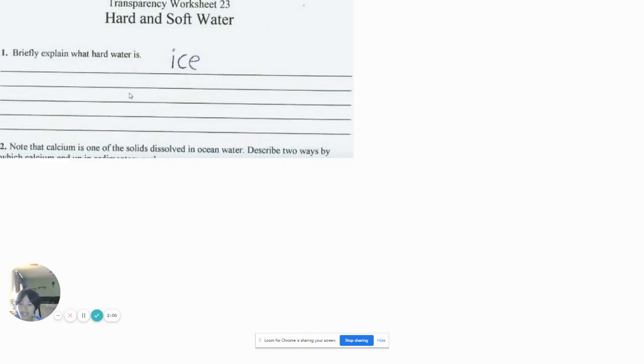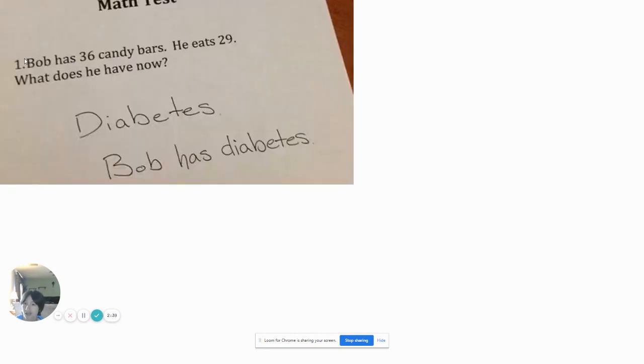Hard and soft water. Briefly explain what hard water is. It's ice. Because, you know, a liquid, if it turns into a solid, it becomes ice. But if a solid becomes a liquid, it can be from ice to water. Yes, I know my physical science. Matter and solid with gas. Elements and all that is basically physical science. I learned that in my freshman year of high school. Why? I don't know. But it was pretty easy.